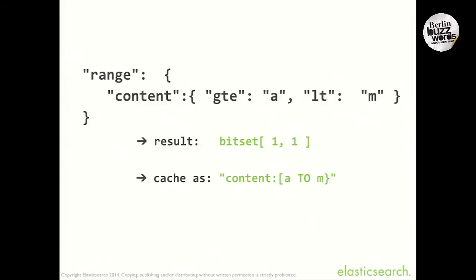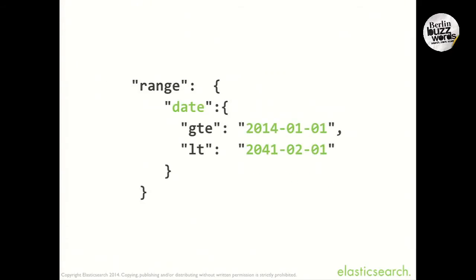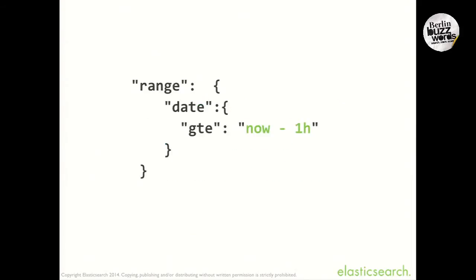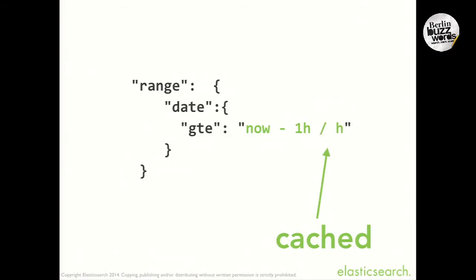That syntax uses a Lucene-style syntax where a square bracket means inclusive and a curly bracket means exclusive. We can run ranges on date fields as well. When you index a numerical date field, it adds extra terms to make ranges much more efficient than in the standard string case — because this is usually where ranges are used, on numbers and dates, not strings. You can even use date math, saying everything from now minus one hour. But 'now' has millisecond resolution, so it's very unlikely we'll ever reuse that clause — using 'now' like that means the filter won't be cached. However, we can round it to the nearest hour, in which case there's a good chance we'll reuse it and it is cached.